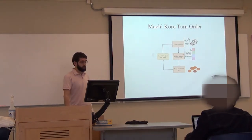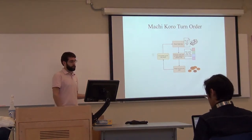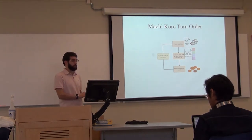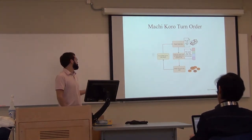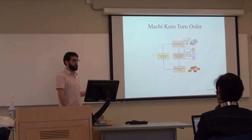The turn order is fairly simple. A player rolls the dice. Everyone does different stuff based on the results of the roll. The player who just rolled the dice can buy one card. And then if there's no winner, you go to the next player.